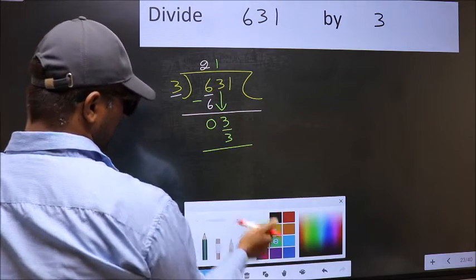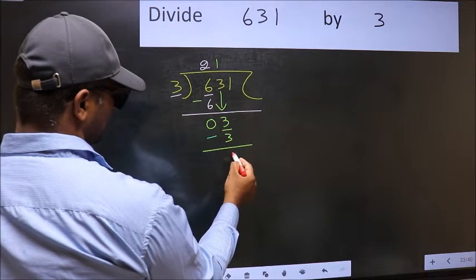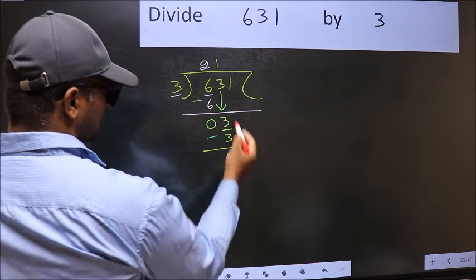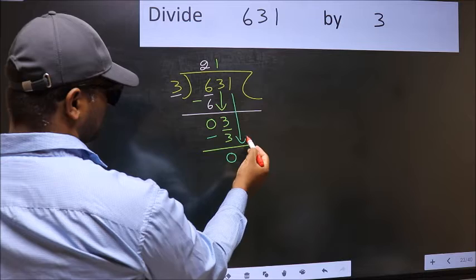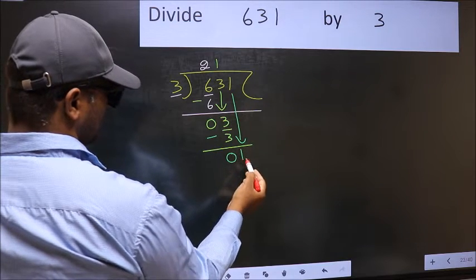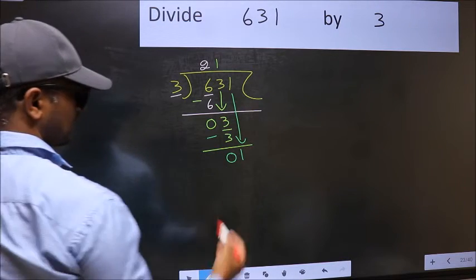Now you should subtract. 3 minus 3, 0. After this, bring down the beside number. So 1 down. After this step,